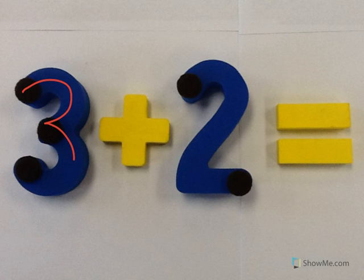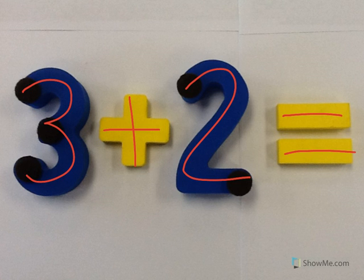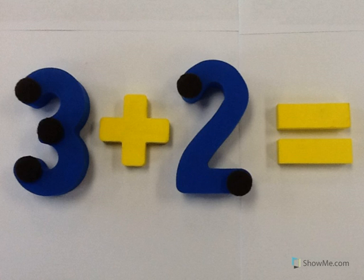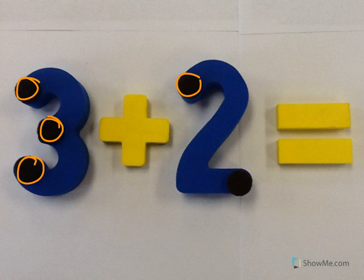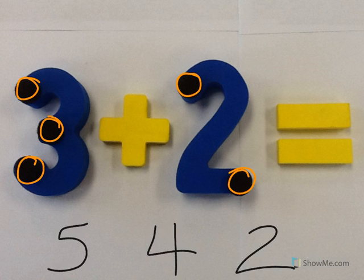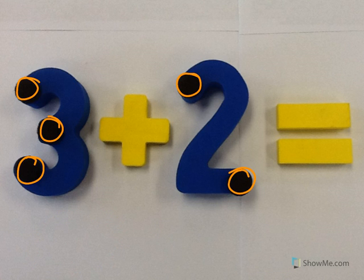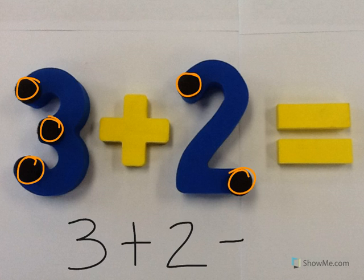One, two, three, four, five. Let's add the touch points. Ready? One, two, three, four, five. Point to the number five. Good. One, two, three, four, five. Good.